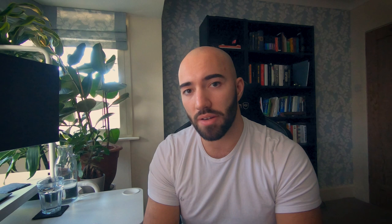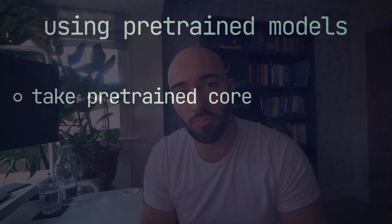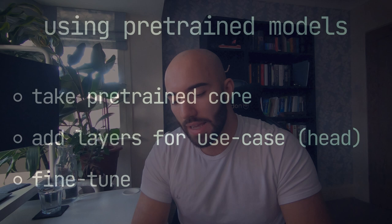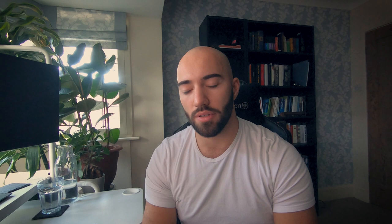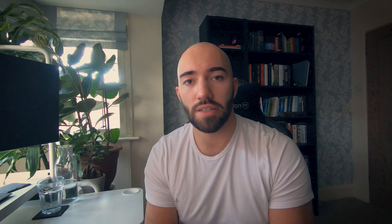These new transformer models also had the benefit of generalizing very well through transfer learning. With transformer models, we take the core of a model that has been trained using significant time and computing power by the likes of Google and OpenAI, add a few layers onto the end designed for our specific use case, and fine-tune it a little bit. One of the most widely known of these models is probably BERT, and later in this video we're going to have a look at one called MPNet.